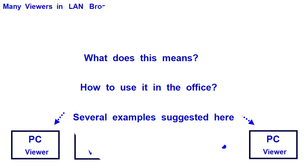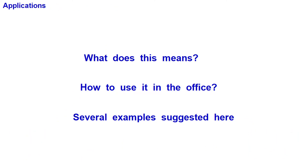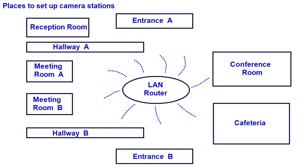What does this mean and what can we make use of this capability in the company office? I can think of several applications. Within the local area network, you can set up camera stations in certain areas such as entrance hallways. You can also set up camera stations in certain rooms such as the reception room, cafeteria, meeting room, and conference room. You have the option to set up the play out station elsewhere for these camera stations.